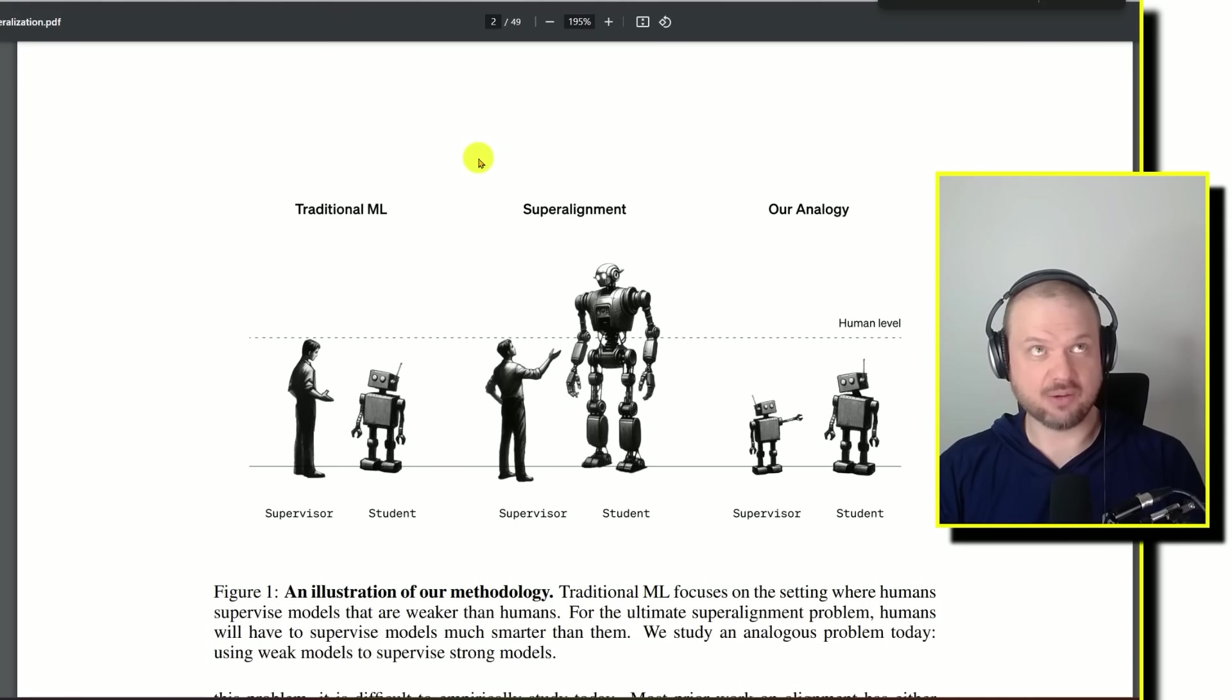And then super alignment, how that would look like is this idea that this human who is not as smart as the super intelligent AI, trying to teach it and tell it what to do. This is what a lot of people have concerns with, how do you control something that is far smarter than yourself? And their approach is we start right now before they get past the human level of intelligence, are we able to train a smaller model to supervise a larger model?